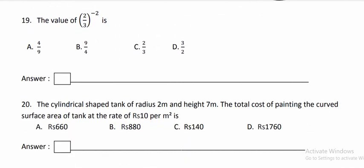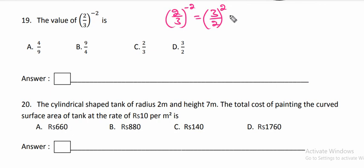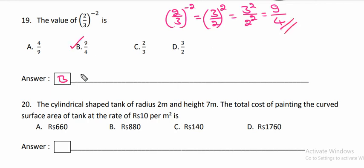The value of (2/3) to the power of minus 2. We can't find the power in negative form — we have to write 3 by 2 to this power. That means 3 squared over 2 squared — three squared is 9 and two squared is 4. This gives 9 divided by 4.